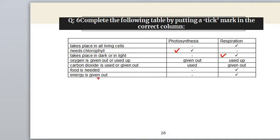During respiration, oxygen is used up. Next: 'Carbon dioxide is used or given out.' Carbon dioxide is used in photosynthesis and given out in respiration. Next: 'Food is needed.' In photosynthesis, plants make their food, so food is not needed. Food is needed in respiration — correct answer: Respiration. Next: 'Energy is given out.' Energy is given out during respiration when we exchange gases — correct answer: Respiration. That completes Question 6.